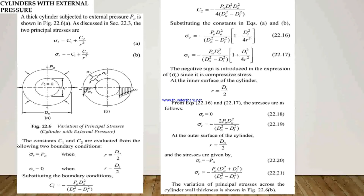Here, a thick cylinder subjected to external pressure po, as shown in figure. In this section, we calculate the two principal stresses generated — tangential stress and radial stress. Tangential stress: sigma_T equals C1 plus C2 divided by R² as equation A. Radial stress: sigma_R equals minus C1 plus C2 divided by R² as equation B. These two constants C1 and C2 are evaluated from the boundary conditions: sigma_R equals po and sigma_R equals zero.